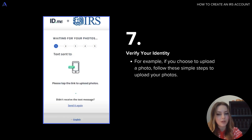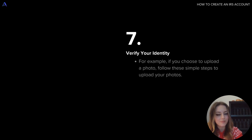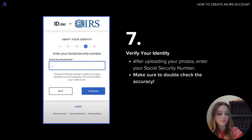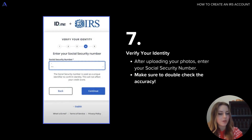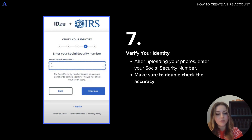For the sake of this example, let's say I have a photo of my driver's license in my camera roll on my phone and I would like to upload it to the irsid.me account. So I would follow these steps here. If I'm uploading a photo, for example, I would tap the link to upload the photos and just go through these simple steps. After you upload your photos, it's going to want you to continue to verify your identity through your social security number. So make sure you have this handy to enter right there and also make sure to double check for accuracy.